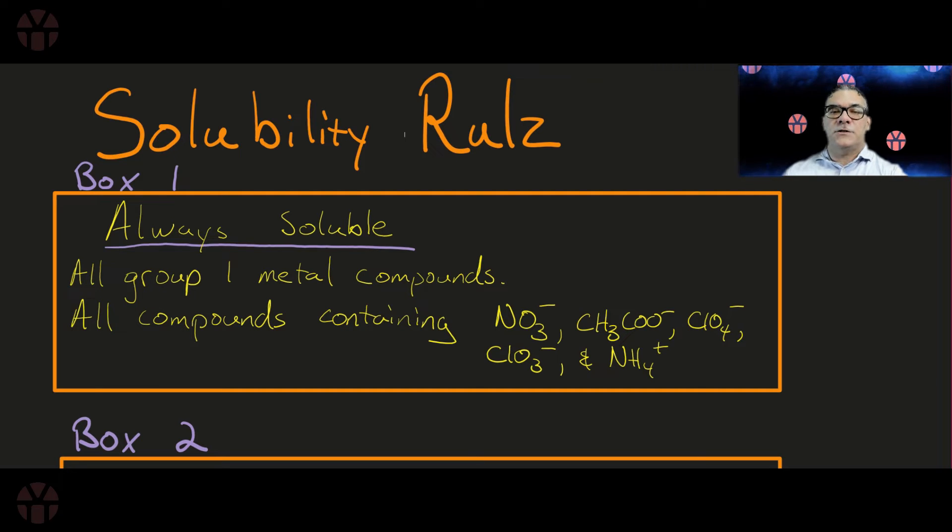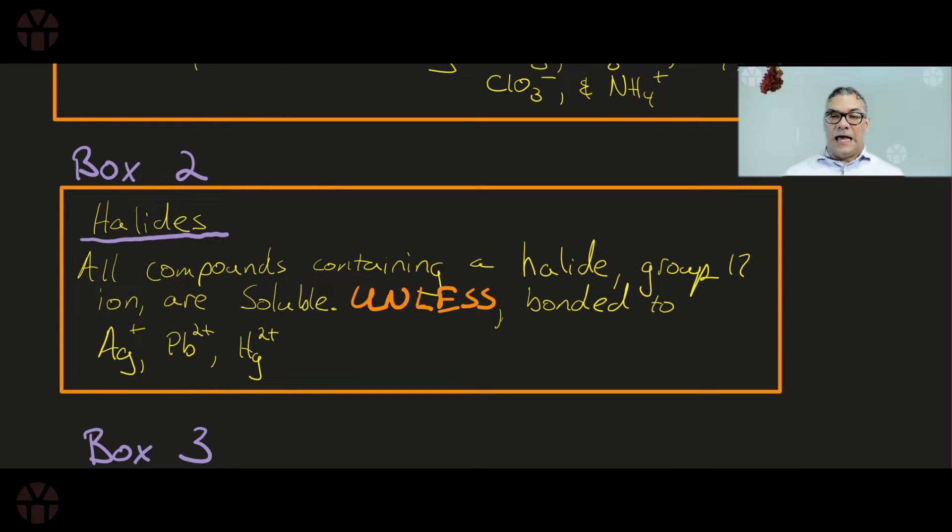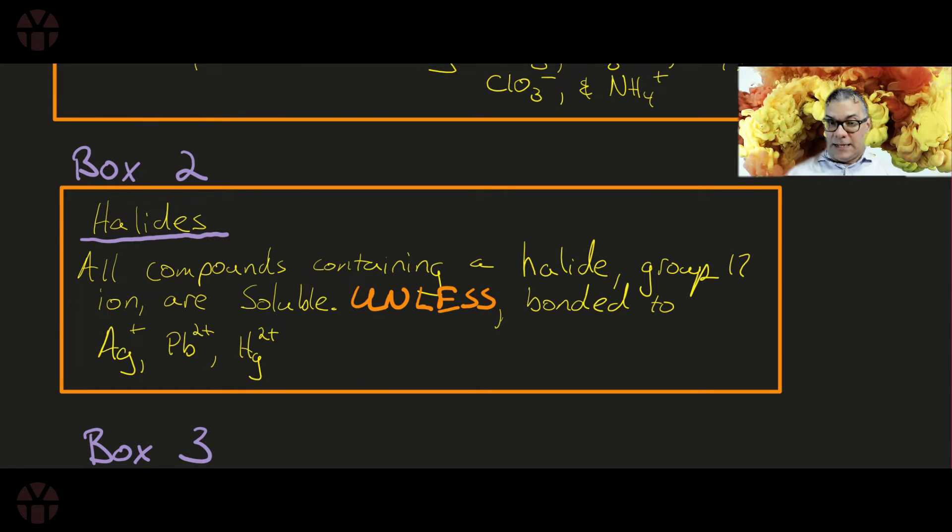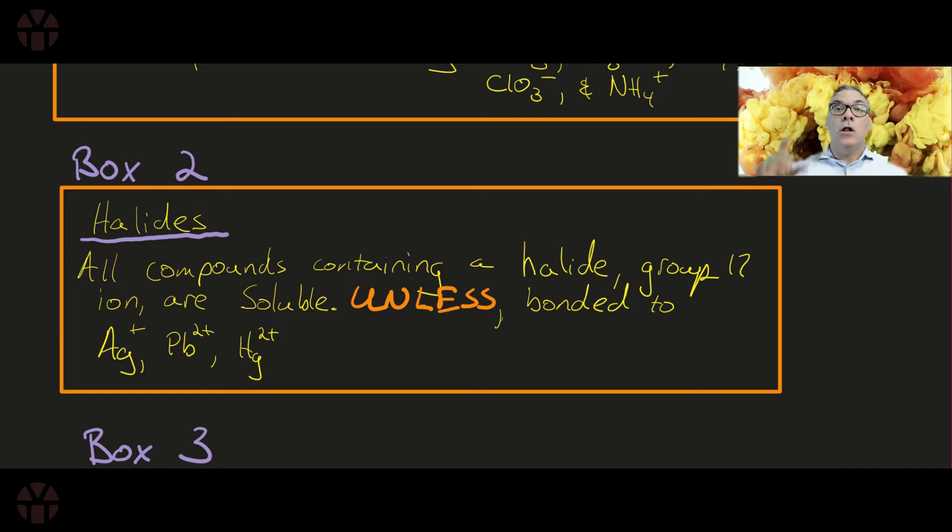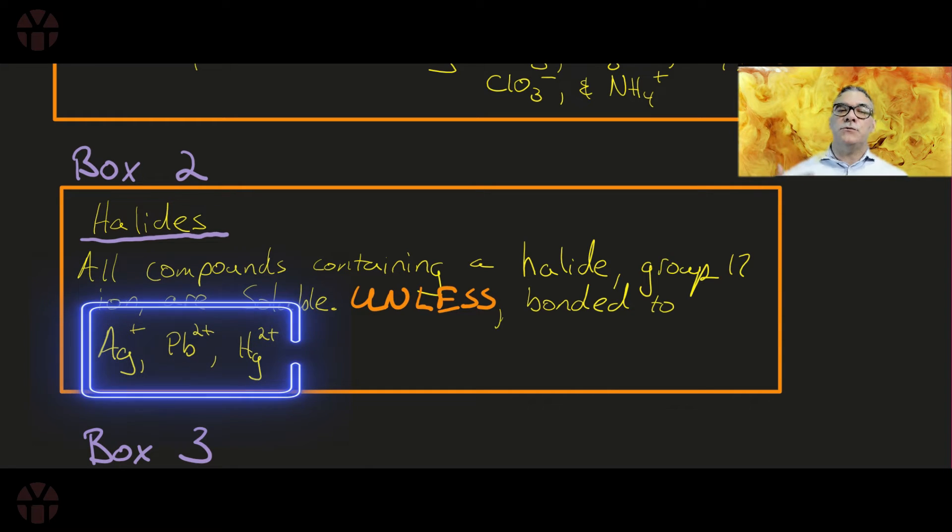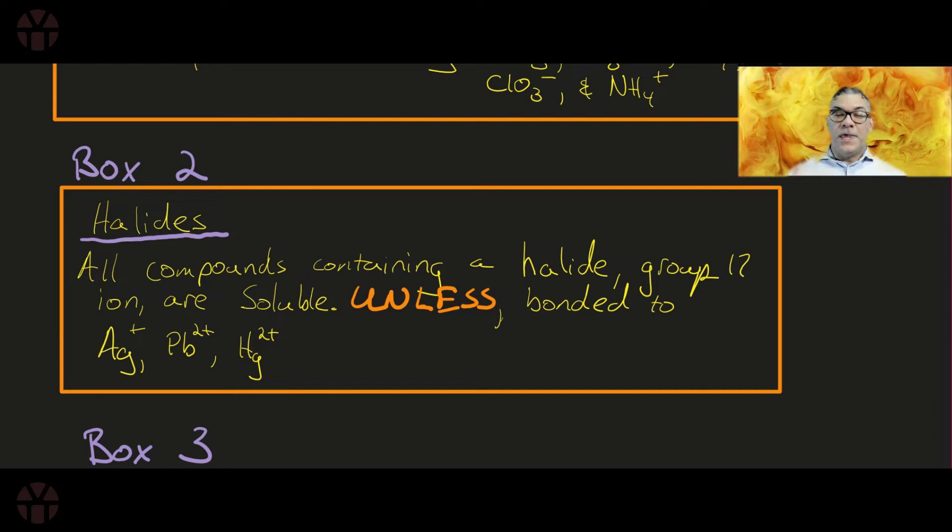Now Box 2 is going to have some exceptions. Box 2 represents the halides. Now recall a halide is nothing more than a group 17 ion - so a halide is group 17, this is going to be my fluorines, my chlorines, my bromines, my iodines. So all group 17 compounds - all compounds that contain a halide are always soluble unless they're bonded to silver ions and then the two that I affectionately refer to as my fat bastards, which are lead 2+ and mercury 2+.